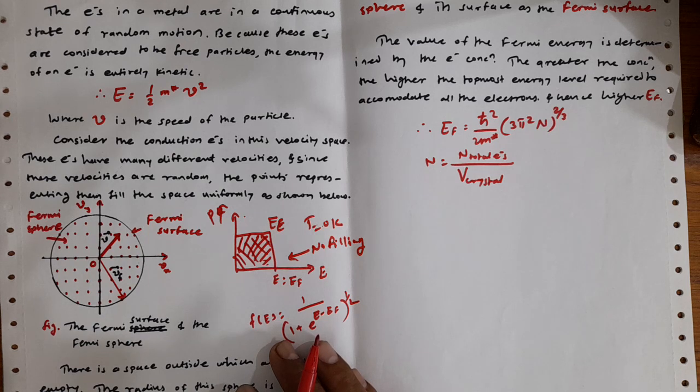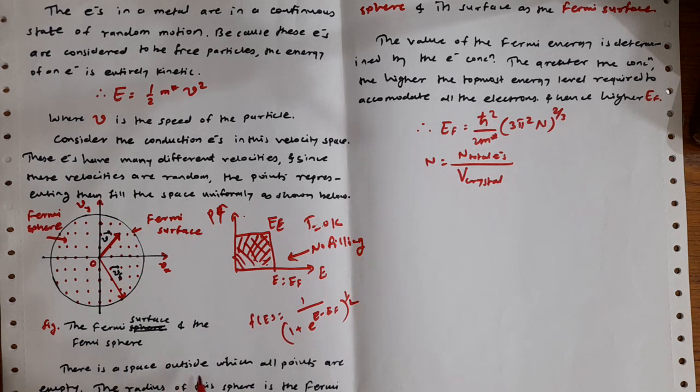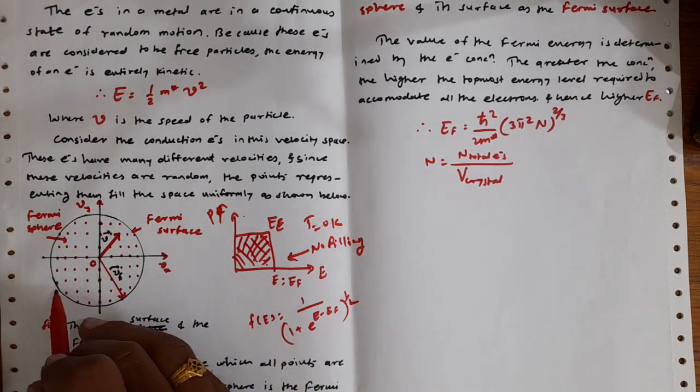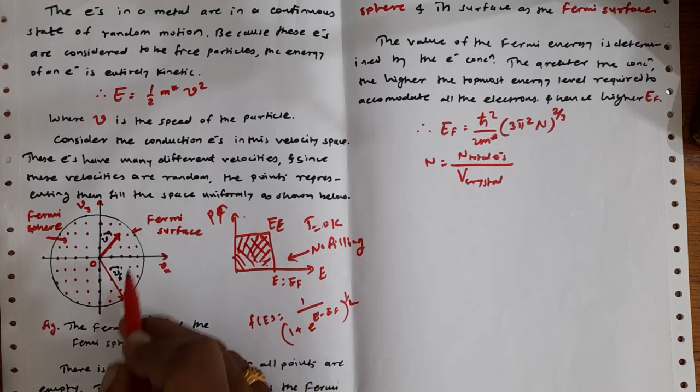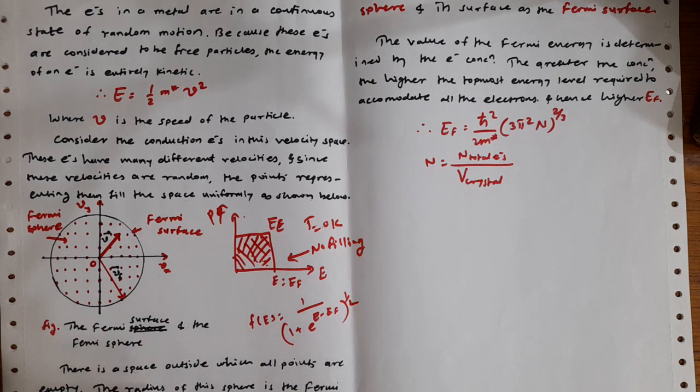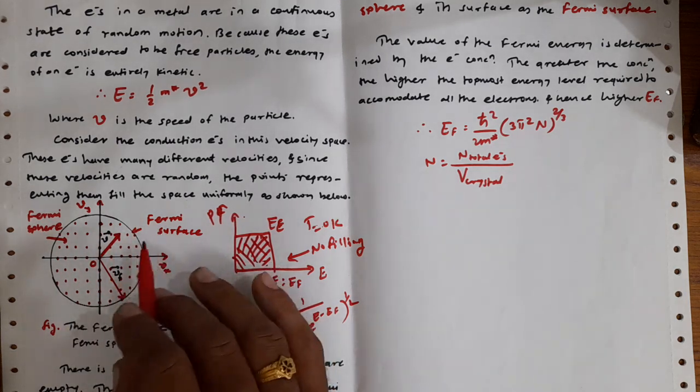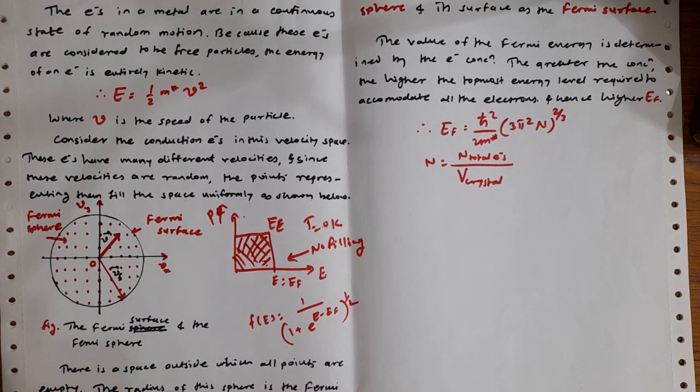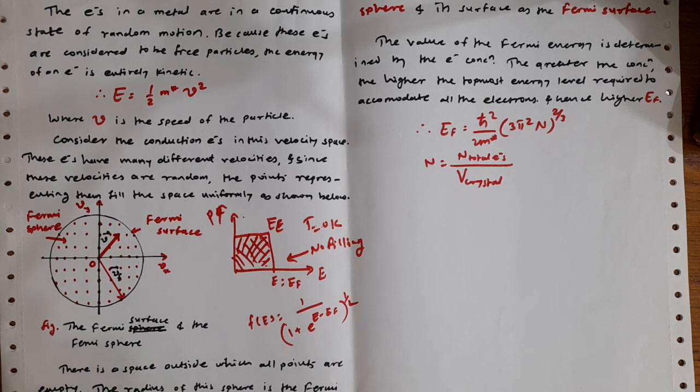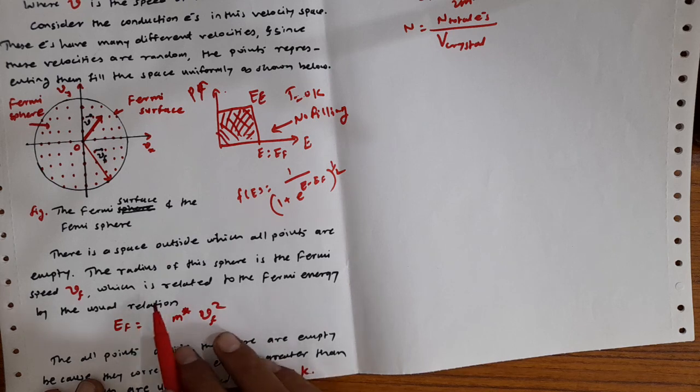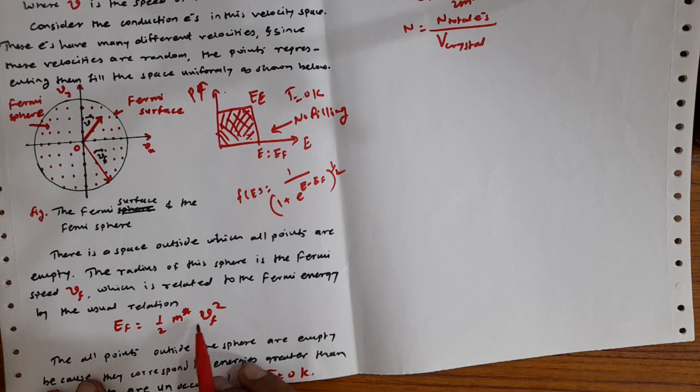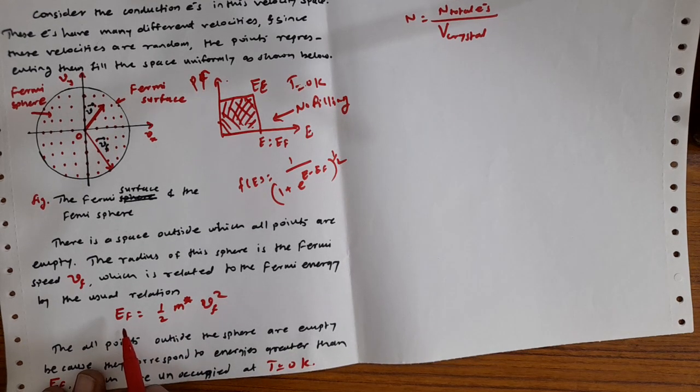Now we have drawn a circle around it representing this velocity space. If the z axis is considered as zero, we will be making a sphere. Outside this sphere or outside the circle there are all non-empty spaces. The radius of this sphere is the Fermi speed, that is vF, which is related to the Fermi energy by the usual relation: EF equals half m star vF square. What is the Fermi energy? This is the highest filled occupied energy state in a metal at absolute zero temperature.